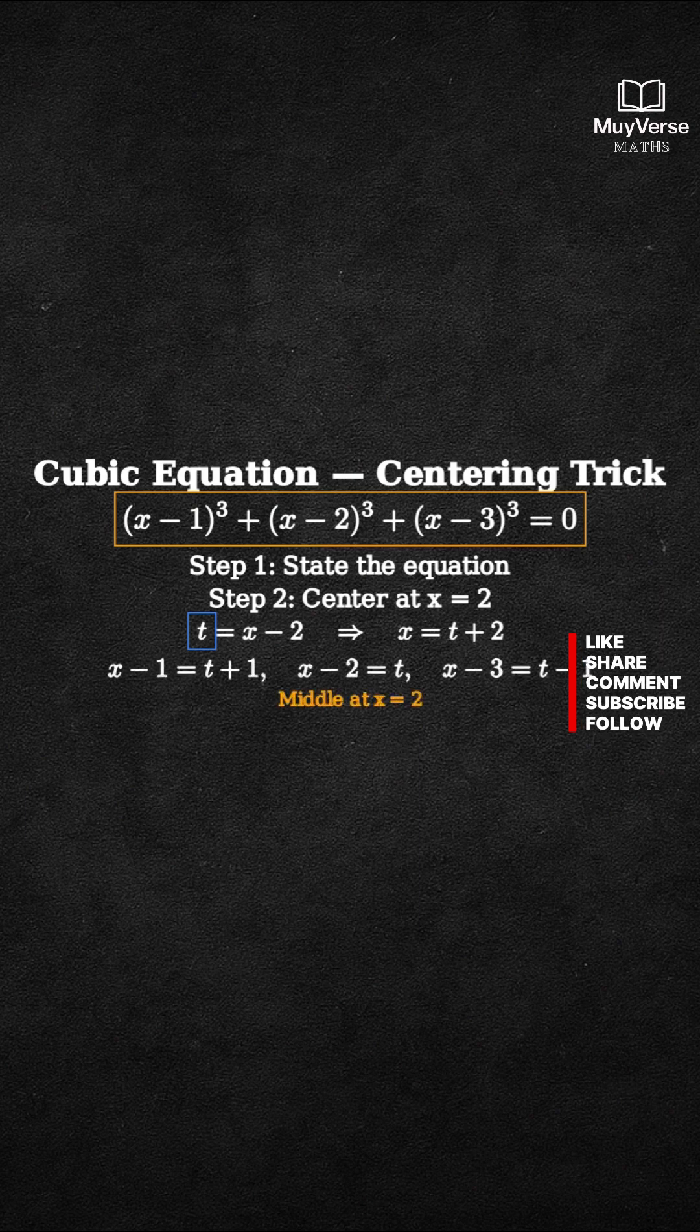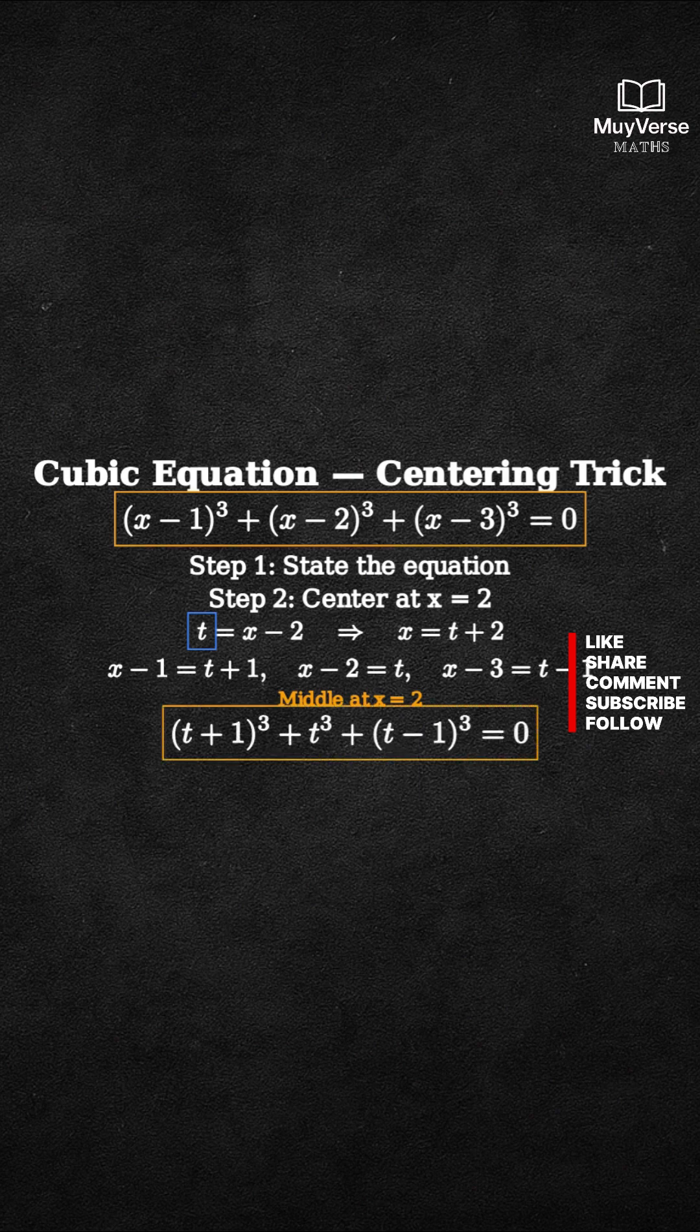Left side becomes open parenthesis t plus 1 close parenthesis cubed plus t cubed plus open parenthesis t minus 1 close parenthesis cubed equals 0.